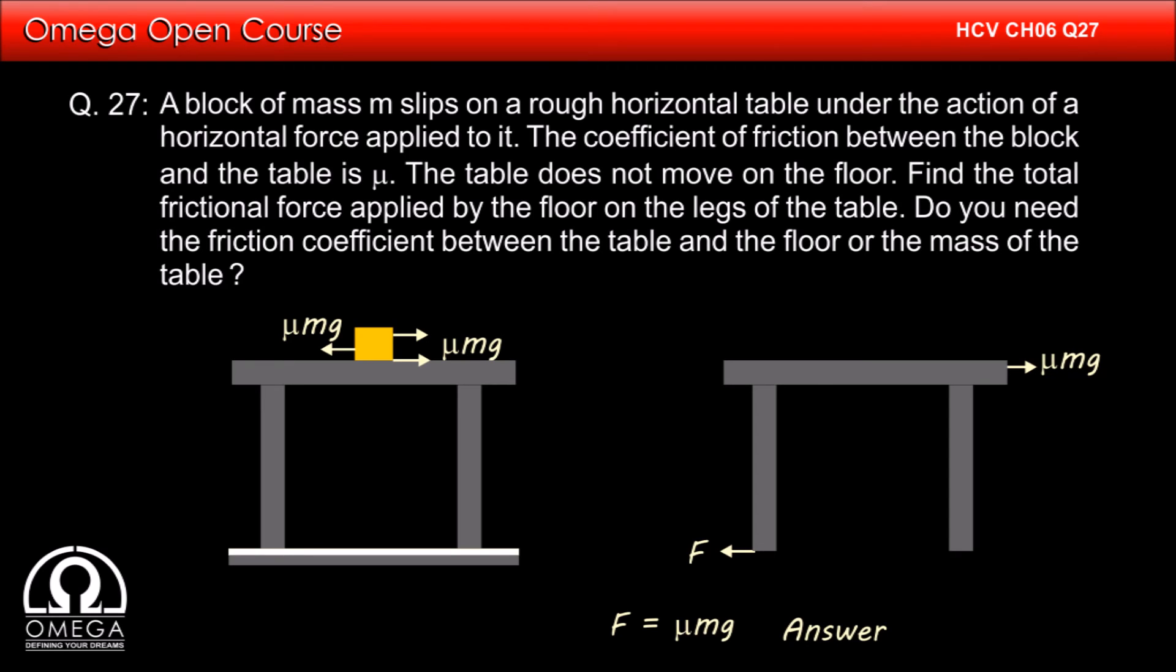To find the force of friction on the table from the floor, we do not need to know its mass or coefficient of friction as long as the table is not moving, because in that case friction will just be equal to the force trying to move it.